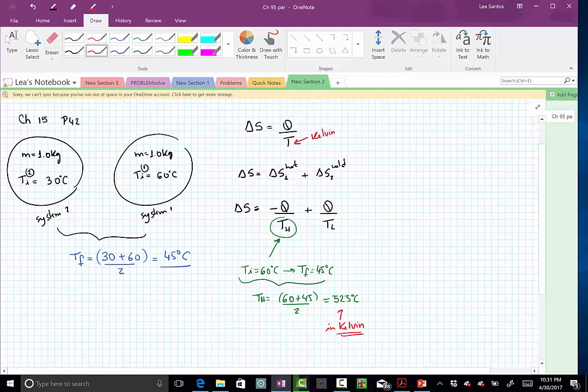The same idea we are going to do for this TL. This is the system, the system 2, the cold system. So, initially the temperature is 30 Celsius. It ends up warmer, it ends up at 45 Celsius. So, what is the temperature in between? So, in between, the mid-temperature is what I'm going to enter as the TL.